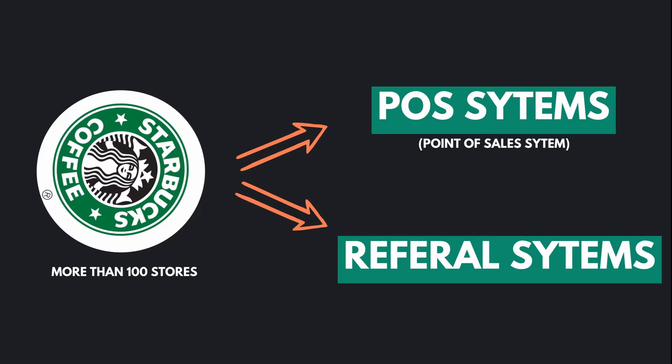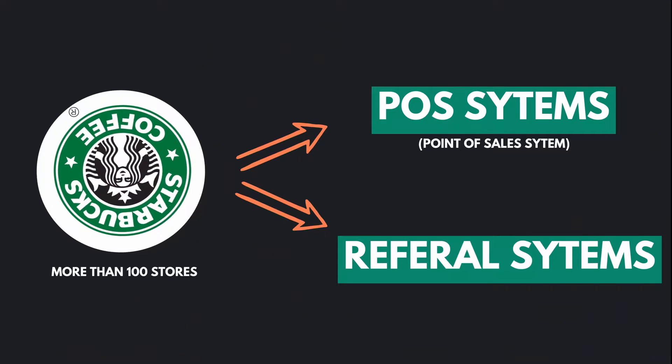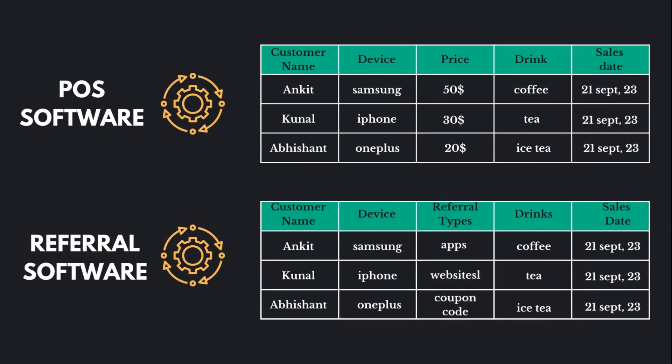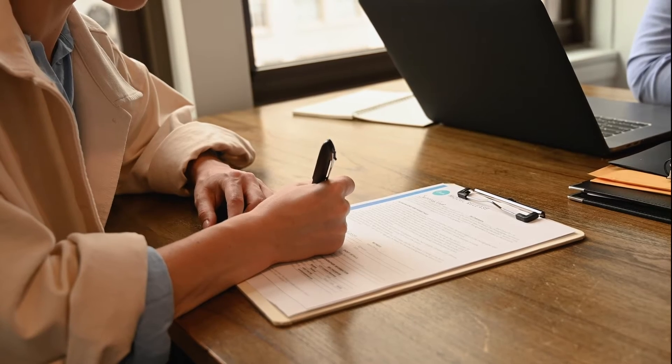Starbucks probably also has an app which is a referral or CRM app to maintain customer relationships. They have multiple systems in place, and in that kind of setting, data is being generated especially in a structured format. You can see examples of tables here - people purchasing things from a POS system, and people purchasing drinks through the app or referral program. These applications are usually built by software engineers, and all these different systems generate structured data.